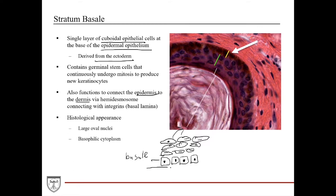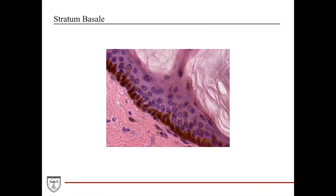The basale layer also functions to connect the epidermis to the dermis. Since this is an epithelial layer, there is a basal lamina at its base, and the cells have hemidesmosomes which connect to integrins within the basal lamina to secure the epithelial layer to the dermis. Histologically, the basale cells have large oval nuclei and a basophilic cytoplasm. You can really appreciate the cuboidal shape and the darker-staining cytoplasm, which gets lighter and more elongated as you move more superficially toward the corneum layer.